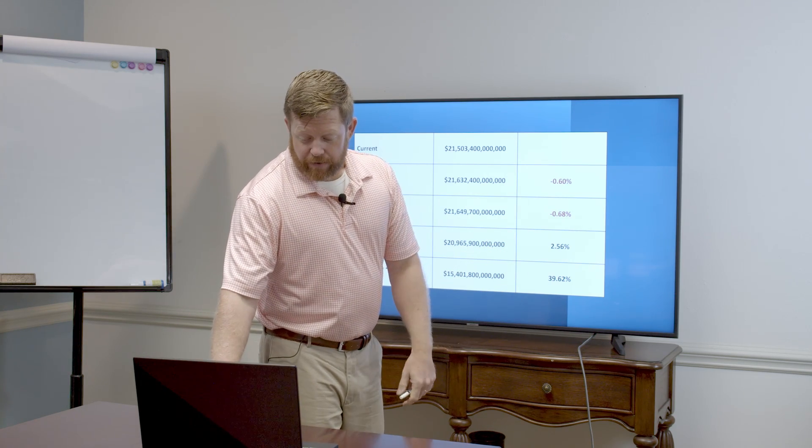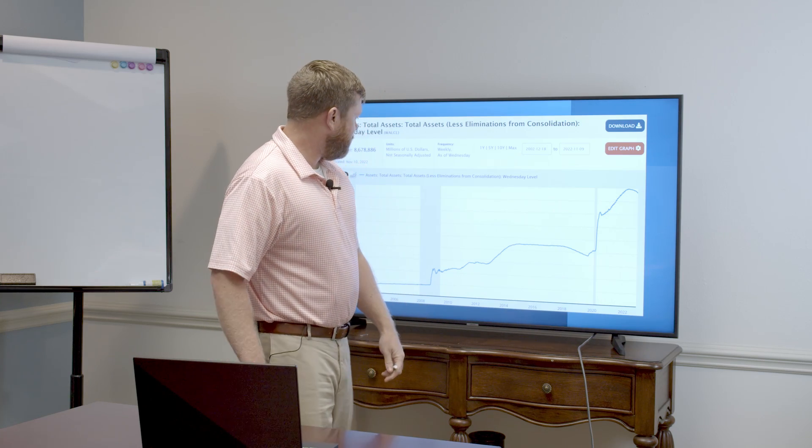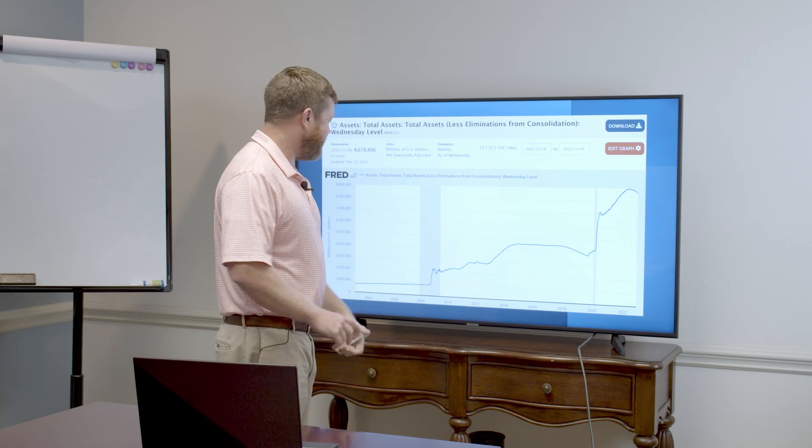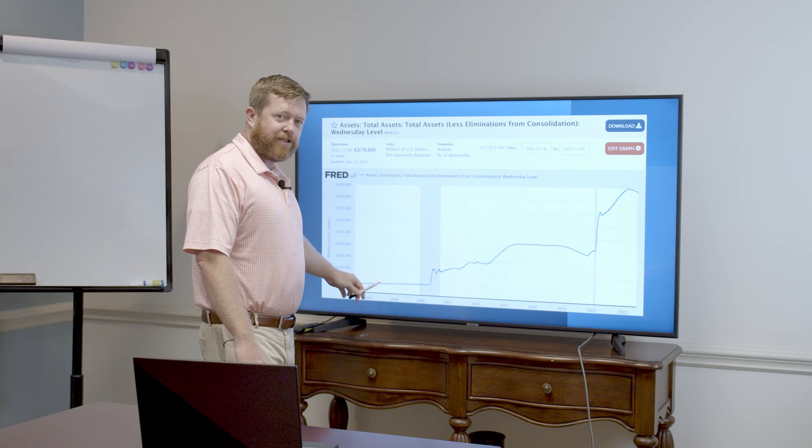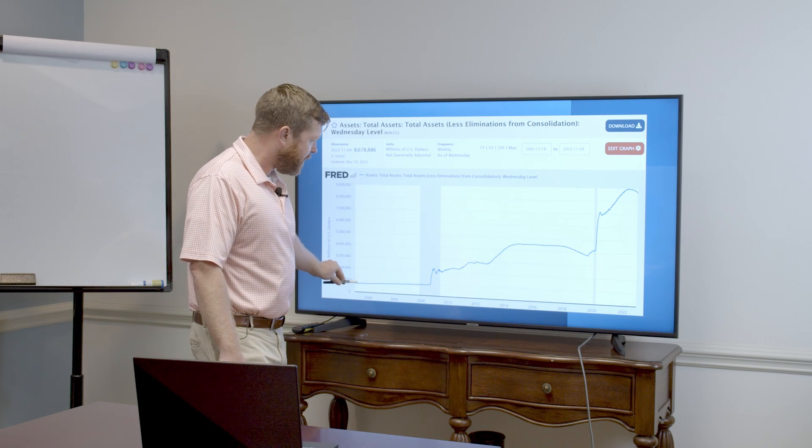So now let's jump over to balance sheet. Wow, that's a cool-looking graph, isn't it? If we look at how much money was parked at the Fed, this is going back to like 2000, right? Less than a trillion.